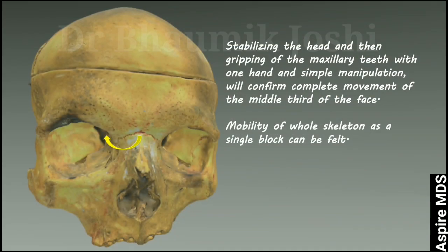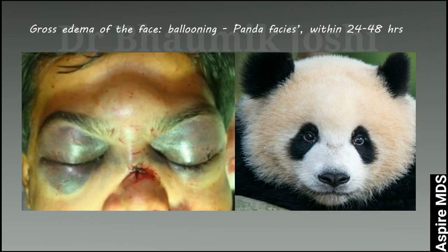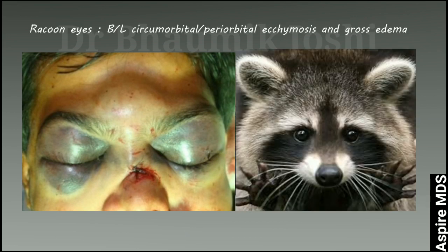Now we know how the fracture line passes in LeFort III fractures. If you stabilize the head and grip the maxillary teeth and manipulate the maxilla, what you can feel is movement of the entire middle third of the face as a single block. You will also see gross edema of the face — known as ballooning or panda face — developing within 24 to 48 hours. As also seen in LeFort II, there will be bilateral circumorbital or periorbital ecchymosis with edema, known as raccoon's eyes.